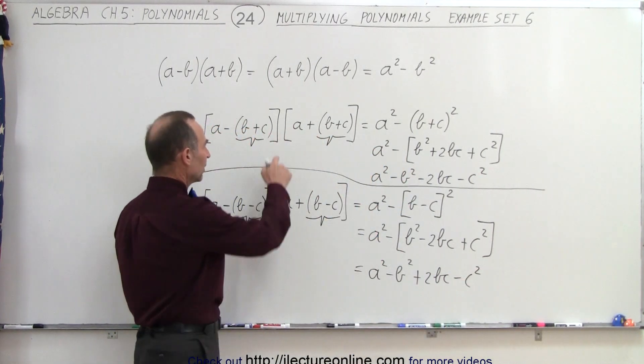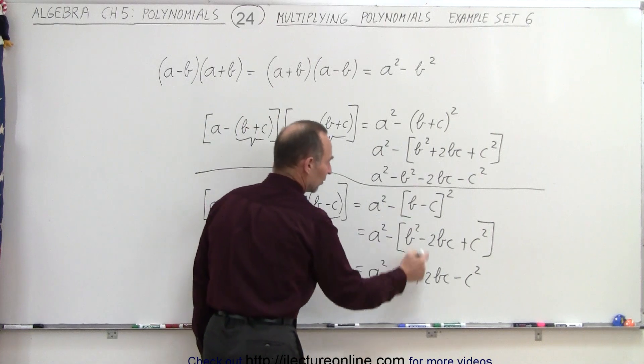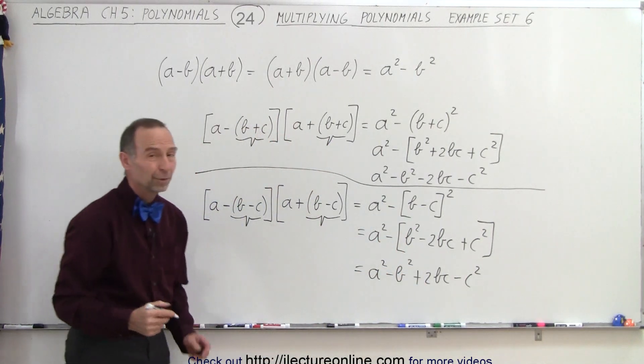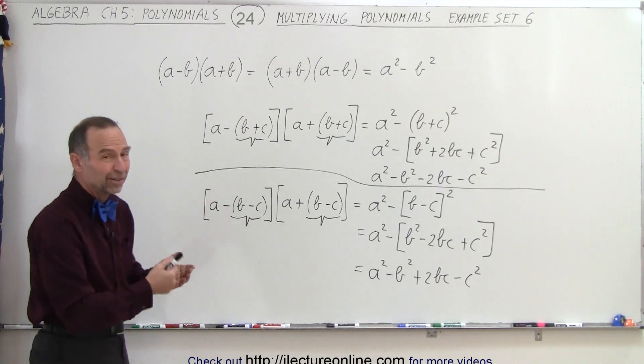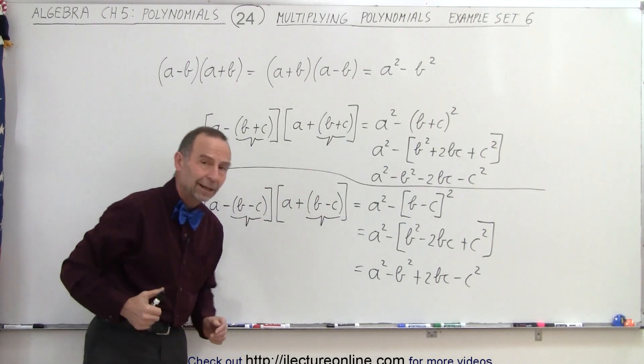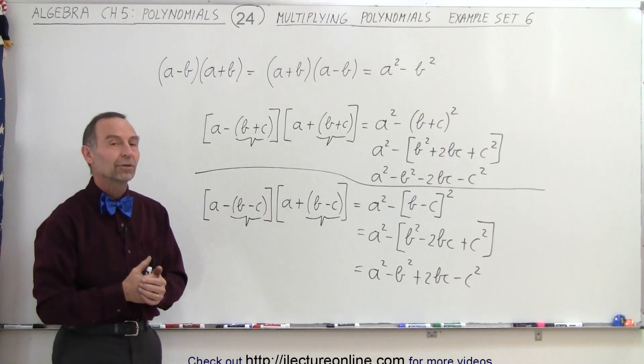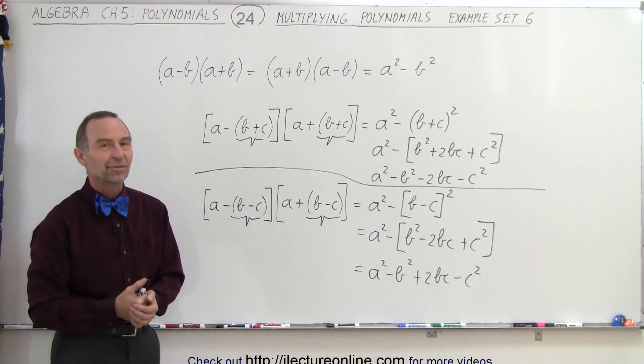And notice the only difference between this and this is that this is a minus here, and that's a plus there. But notice how much easier it is to do that than to multiply them out, because then you would end up with nine products, and then you would have to combine like terms. It's a whole lot easier to do it like this, and that's how it's done.